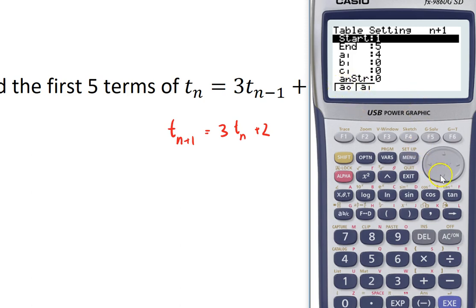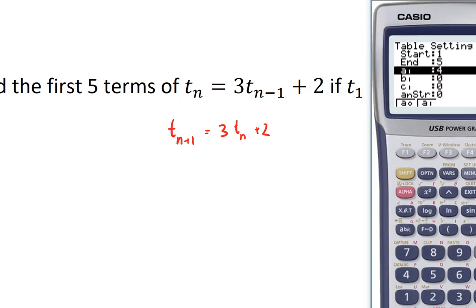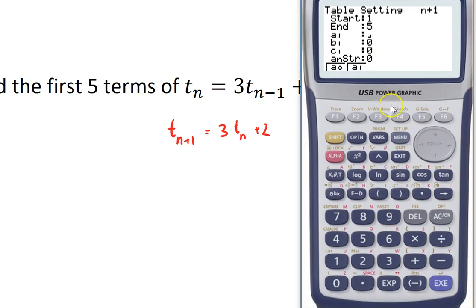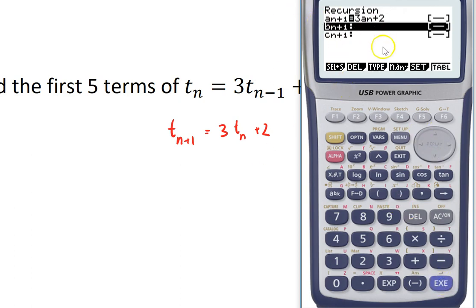Now, I'm going to set it up so that the first term is, what was the first term? 4. It's already written in there. I must have done it already. Try that again. Okay. First term is 4. And I want to know the first term to the fifth term. I want to know the first five terms. Just execute that.